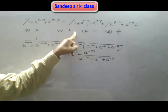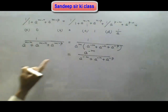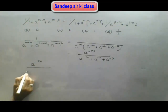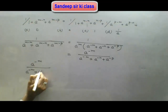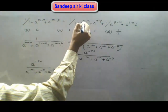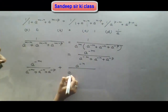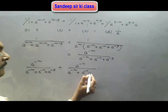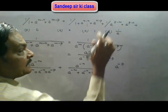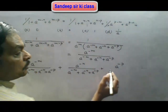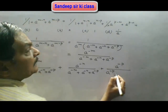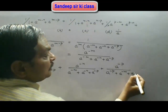Accordingly, the second and third terms can be written similarly. The first term is a^(-m) upon (a^(-m) plus a^(-n) plus a^(-p)). The second term is a^(-n) upon (a^(-m) plus a^(-n) plus a^(-p)). The third term is a^(-p) upon (a^(-p) plus a^(-m) plus a^(-n)).